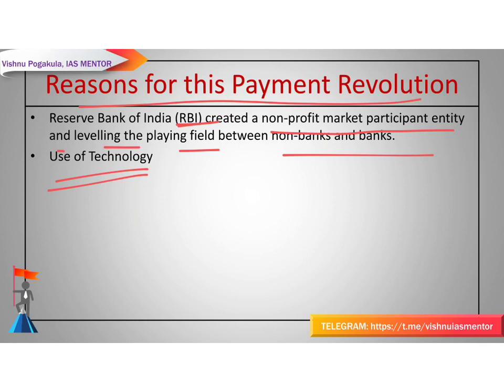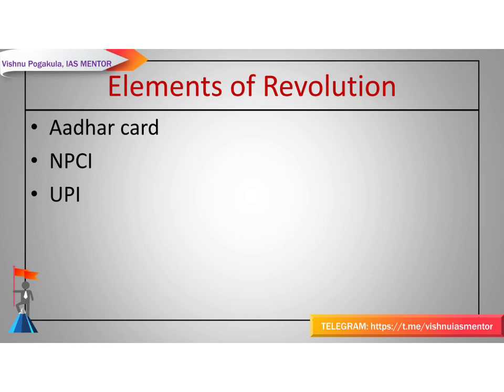One element of the revolution is the Aadhaar card. In 2010, the Indian government decided to take digital fingerprints and an ID scan from each citizen to create a digital identity. About 1.2 billion Indians now have a digital identity. Aadhaar provided a solid foundation for banking the unbanked — financial inclusion — acting as an identity rail, giving banks and fintech companies a secure means to identify prospective customers.